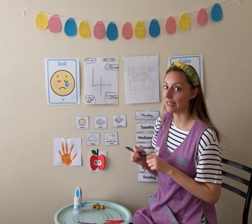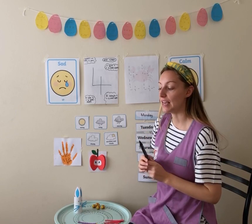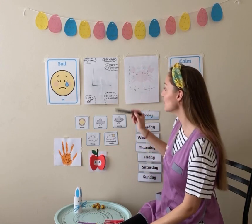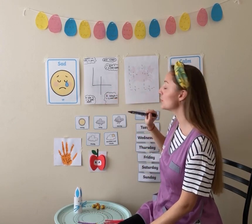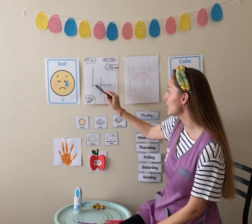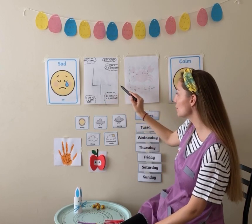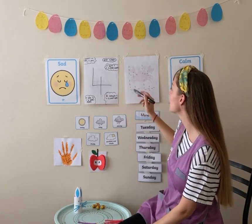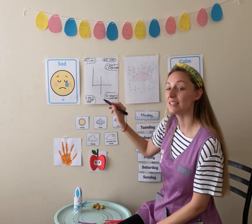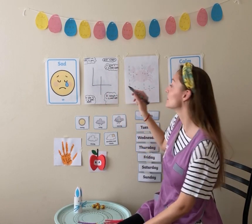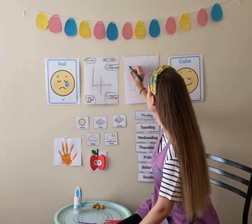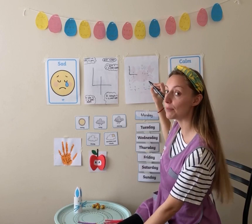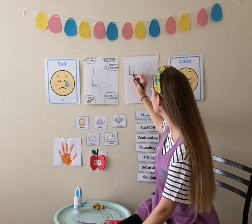Now, let's practice writing the number 4. Go and get a pencil and a piece of paper so you can practice with me. So, here's an example of what the 4 should look like. It's a straight line and then it goes across to the right and then it goes straight down in the middle. This first part is like an L.